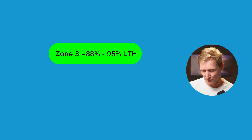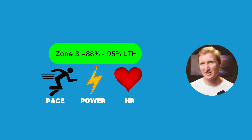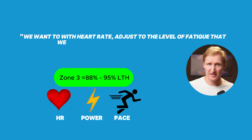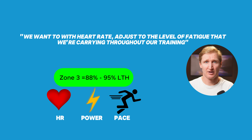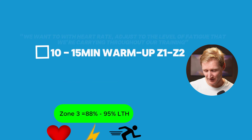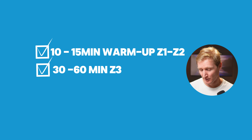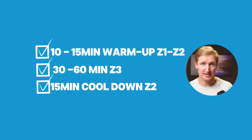Next we have Zone 3, which for me is 88 to 95 percent of lactate threshold heart rate, pace, or power. The metric priority I use is heart rate first, then power, then pace. The reason I use heart rate is to adjust to the level of fatigue we're carrying throughout training. A typical Zone 3 workout is a 15-minute warm-up, then 30 minutes of hilly tempo, heart rate-based, followed by a 15-minute cool-down.